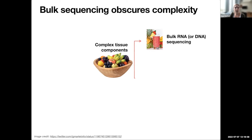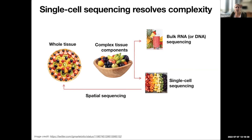To use an incredible analogy I found on Twitter: imagine that a bowl of fruit contains complex tissue components — different types of cells. When we do bulk RNA or DNA sequencing, we mash up all of that fruit into a smoothie, sequence it, and then hope that the smoothie is vaguely representative of the original bowl of fruit. But obviously, we're collapsing a lot of information when we make the smoothie. Now it's almost routine to be able to sequence cells one at a time using single cell sequencing approaches, which means we can recapitulate with pretty high confidence what the different fruits — so what the different cells — were that were originally in the bowl.